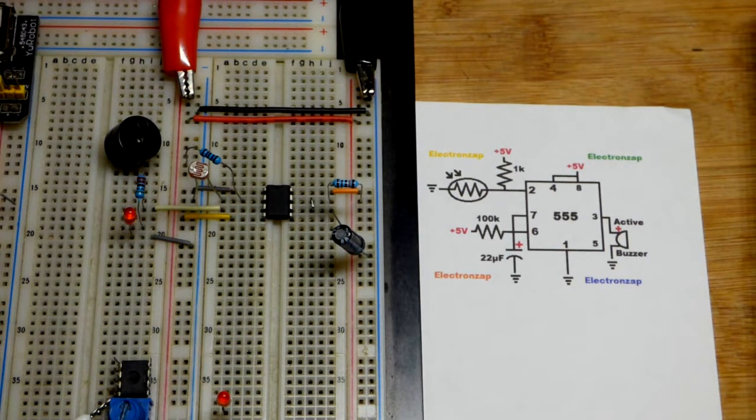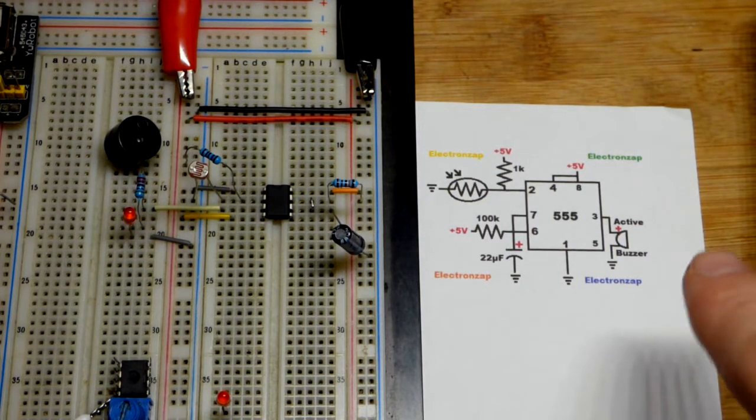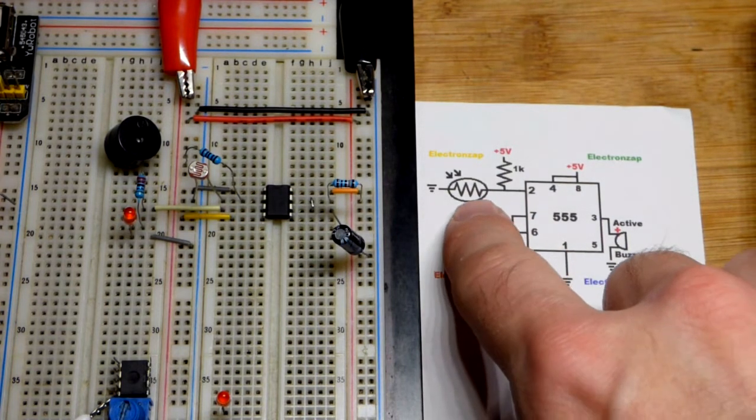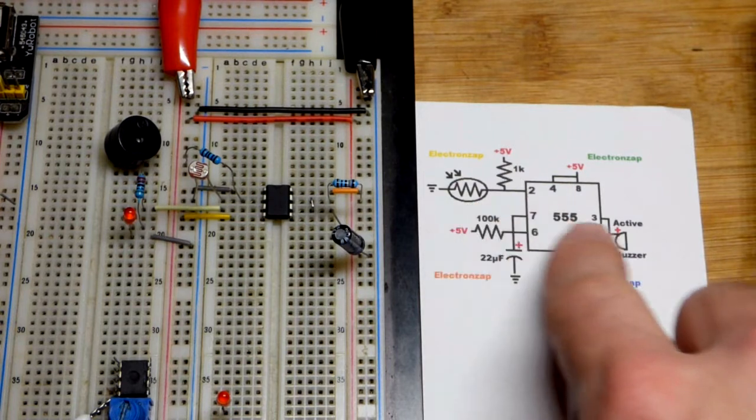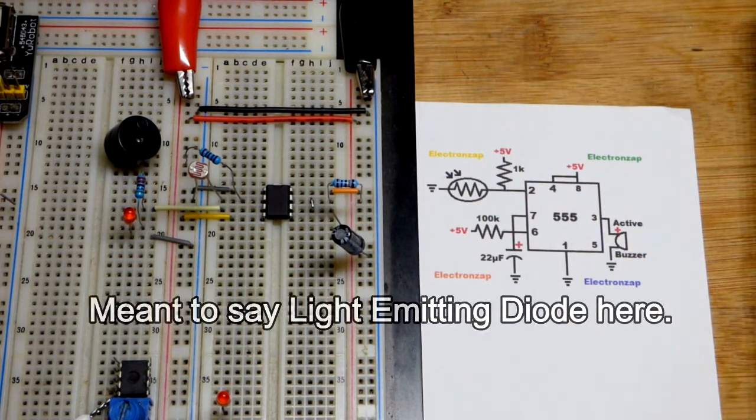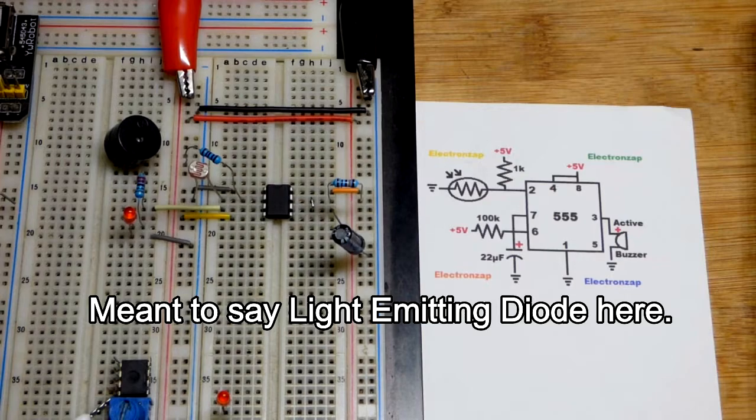A quick pulse of light will set a certain amount of time that the light dependent resistor lights up. So all we have to do is swap out the LED for an active buzzer.